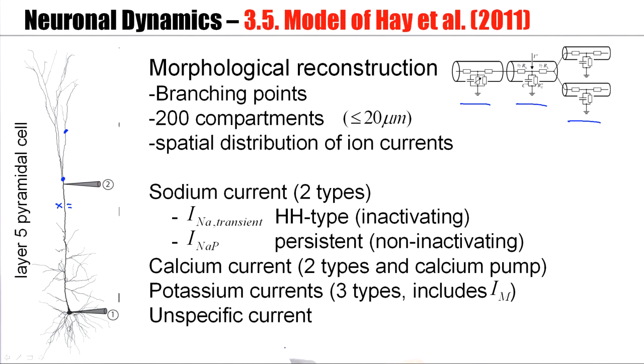Now the spatial distribution of these different ion channel types is not uniform across the dendrite, but some of the ion channels, in particular the calcium channels, have a higher density at some singular spots that are called the hot spots of the model.